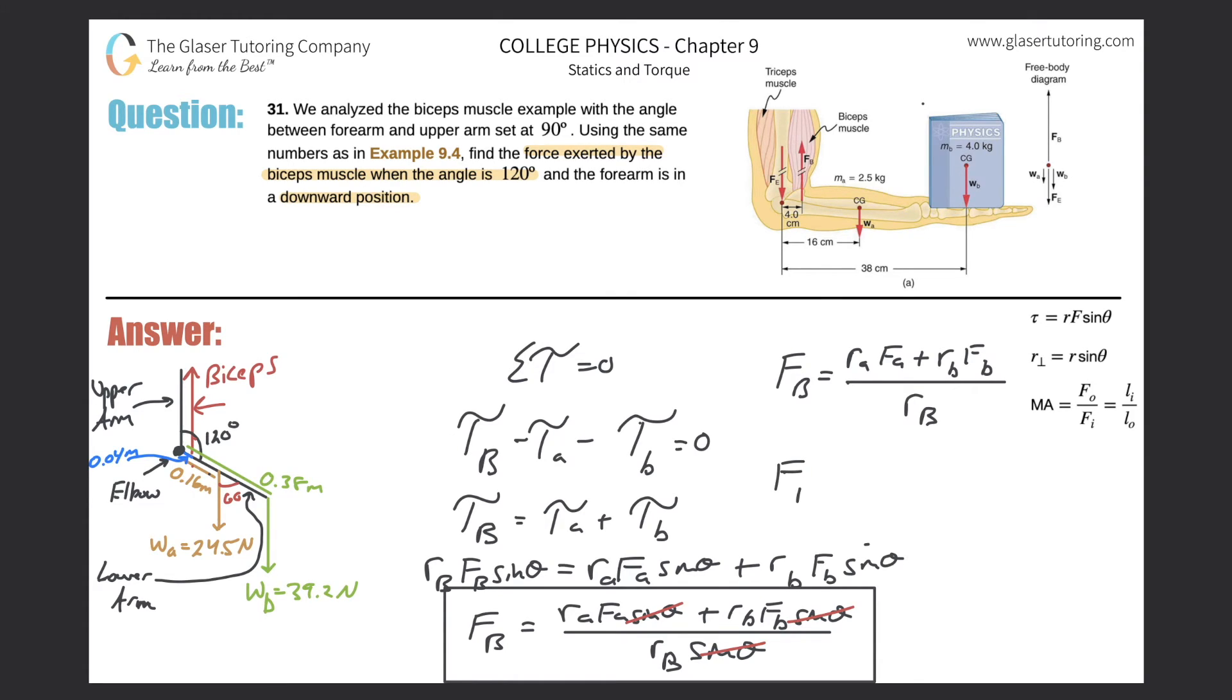Okay, so FB is now going to be equal to, let's just plug in the numbers. So we got RA. Where is RA? So that's the lever arm for the arm. So this is 0.16. Force of the arm was equal to the weight, so 24.5. Plus then lever arm for the book, 0.38. Force of the book was equal to the weight of the book, 39.2. And that's then all divided by that lever arm for the bicep, which is 0.04.